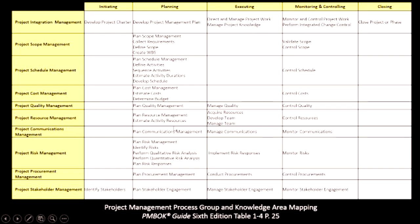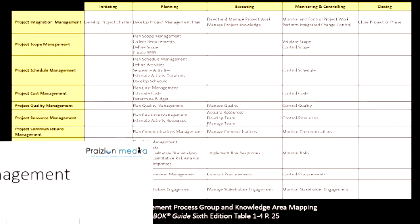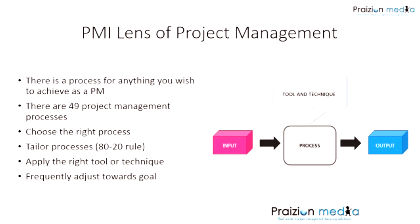What I'd like to do really quickly is take you through a few of these and give you an idea of what exactly the project manager is aspiring to do in these. I'll also call your attention to the fact that every one of those 49 processes has an input — something that goes into the process — a tool and technique to work the process, and an output — something that comes out on the other end.